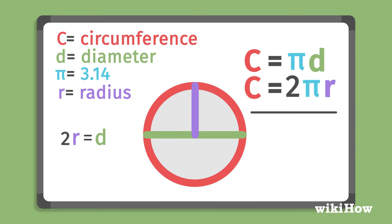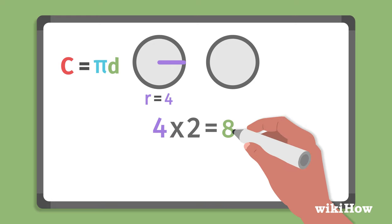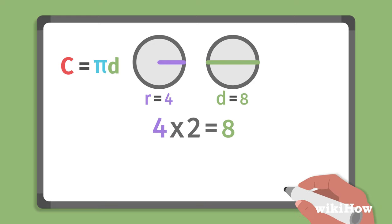where r is the radius. For example, if the radius of a circle is 4 inches, multiply 4 by 2 to get the diameter, which is 8 inches.